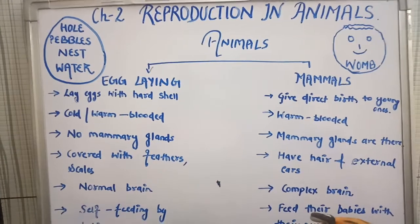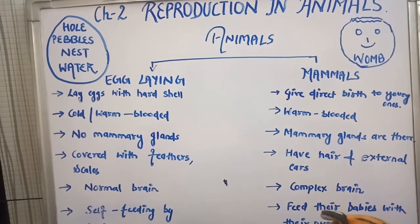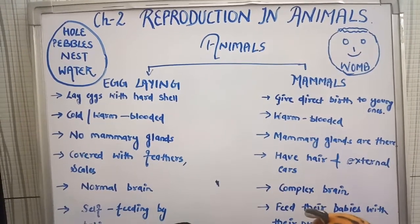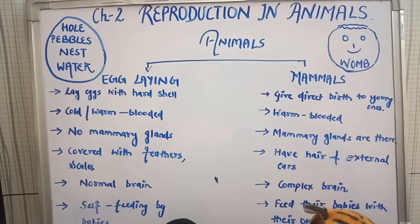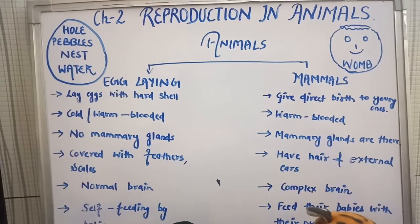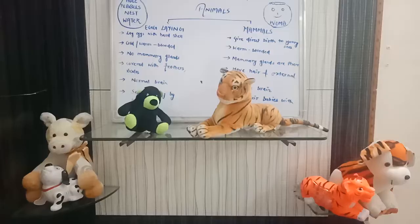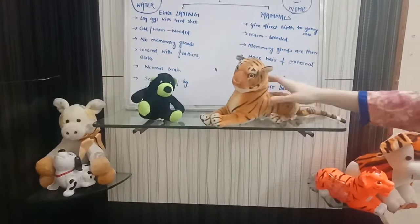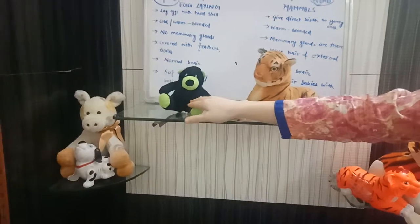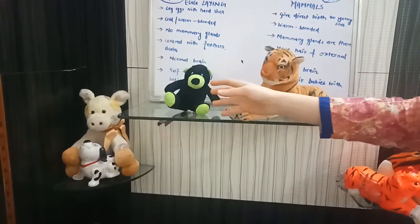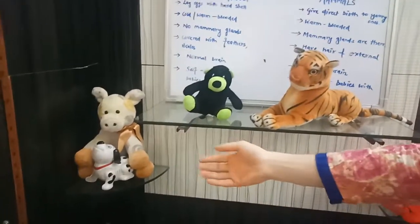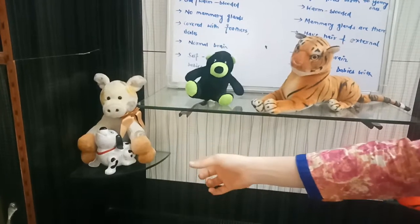Different things have different reproductive systems. Animals have different reproductive systems, humans have different reproductive systems, and various animals like reptiles or amphibians have different reproductive systems. For example, a female tigress will reproduce a small baby cub. A female sow will also reproduce a baby cub. A female dog will reproduce a baby pup.